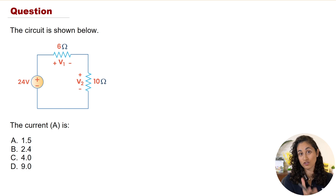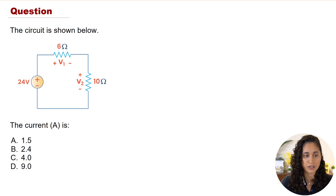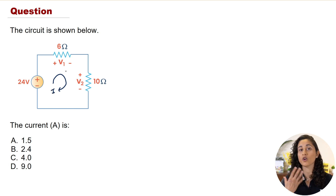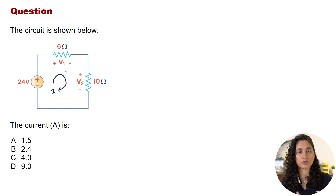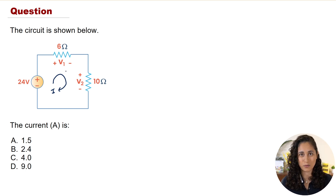We are given a circuit and we want to determine the current flowing in this circuit. The first thing I recommend is to draw the current going clockwise. The next step is to apply Ohm's law and then Kirchhoff's Voltage Law — KVL.